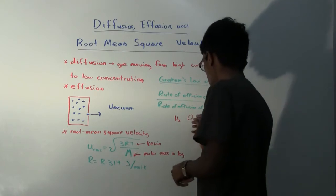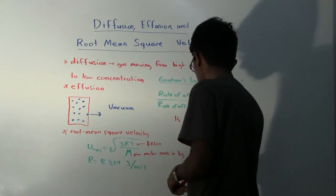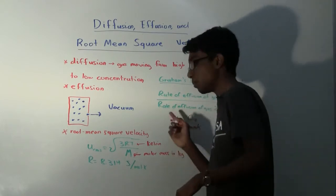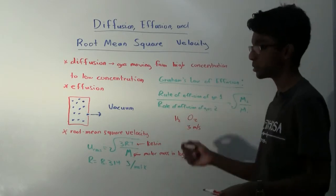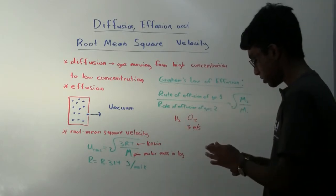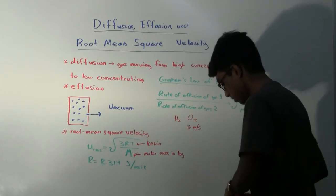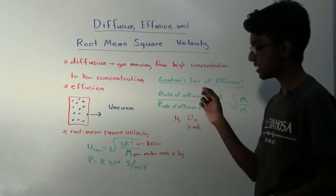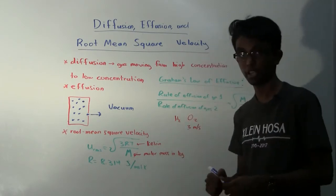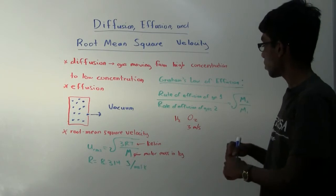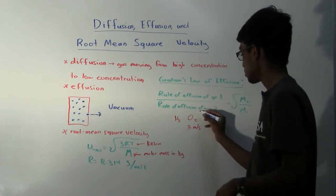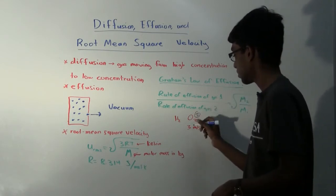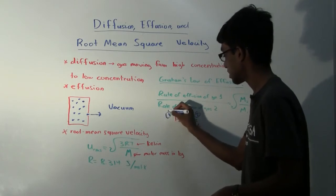So let's say we're given that oxygen effuses at 3 meters per second, and we want to find out how fast the hydrogen will effuse. So before we start this problem, we should label one gas as gas 1, and we should label another gas as gas 2. So I'm going to call oxygen gas 2, and I'm going to call hydrogen gas 1.